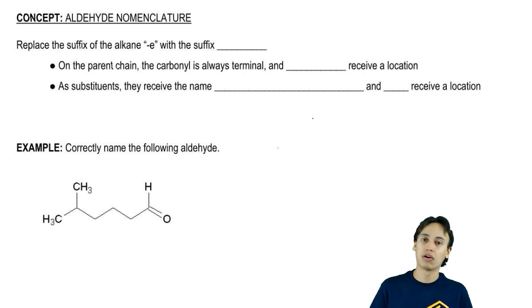Take for example alcohol. We know that alcohols, you take out the E and replace the E of the alkane with the suffix O-L. So ethane would become ethanol.